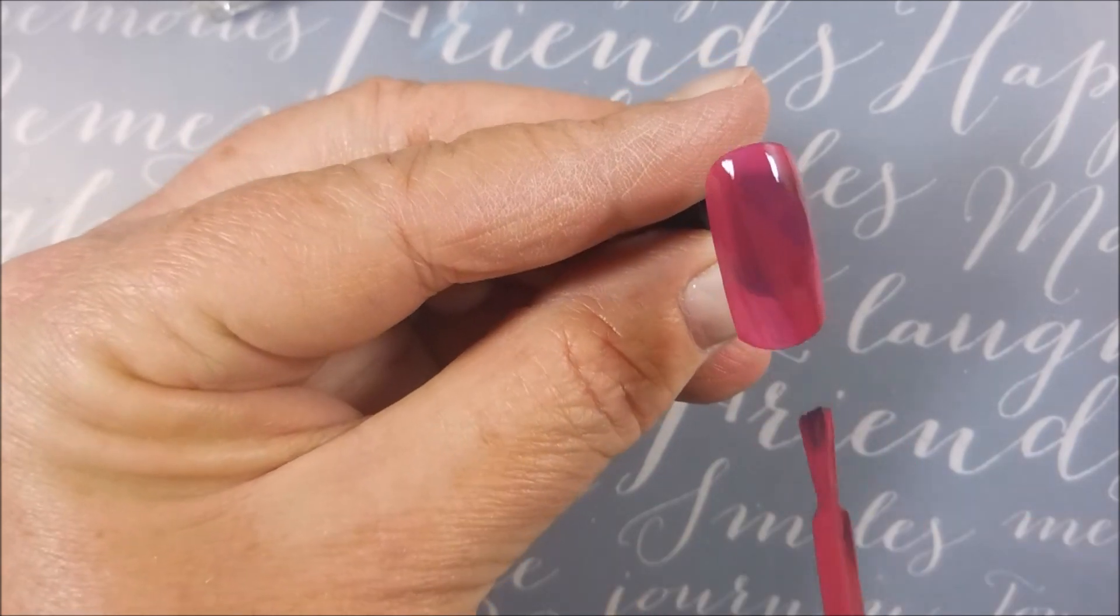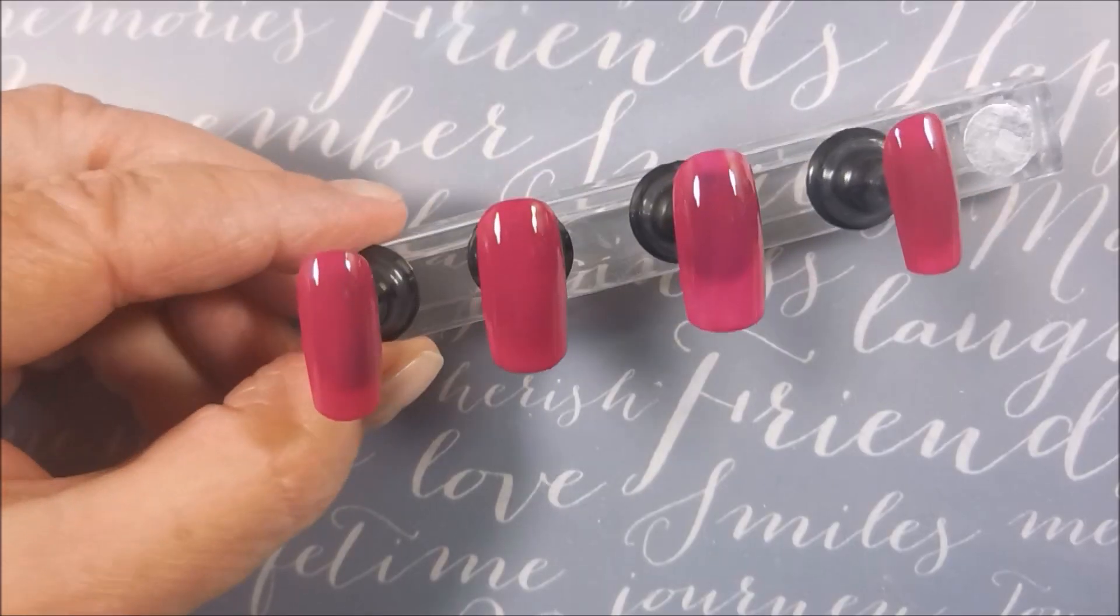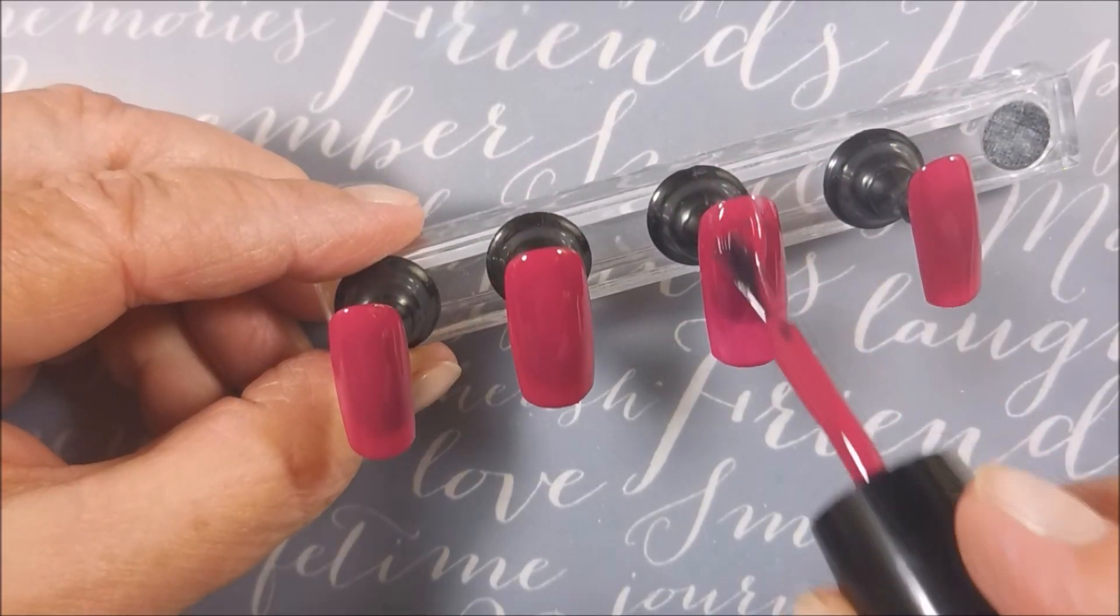So you can see them on. I know it's not as fun doing them on nail tips. But that's the first coat of Ono and we're going to go in for a second coat.